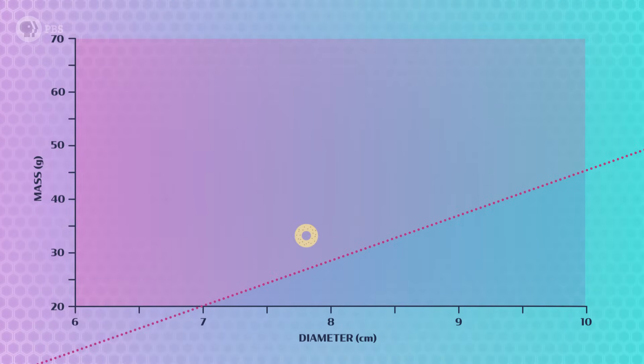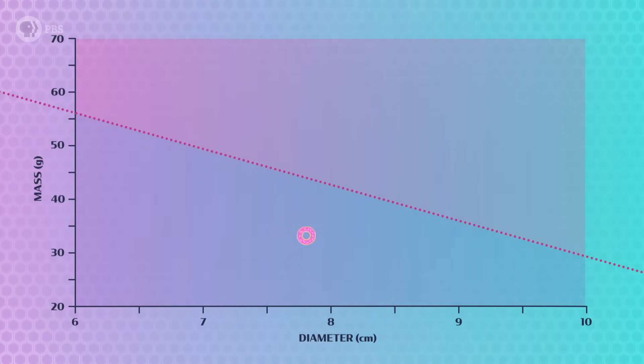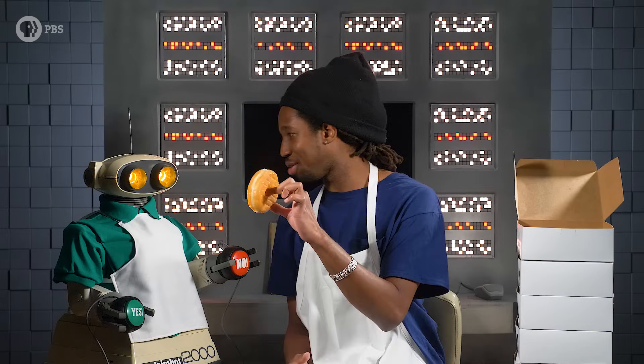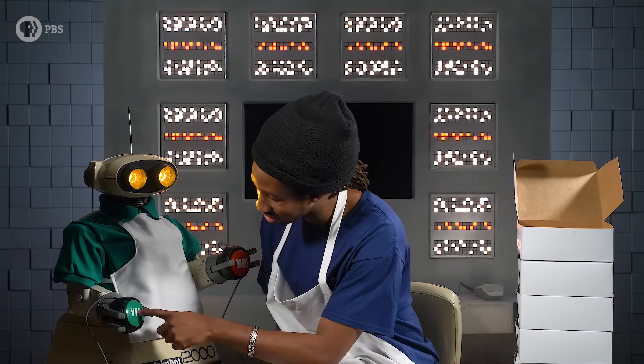Looking back at the graph, we can see that when the weights update, the decision boundary changes. That data point is now below the line, in the doughnut zone. This next item has a mass of 26 grams and a diameter of 6.1 centimeters. John Greenbot says: Doughnut. He got it right! The sum was less than the bias, the data point appeared below the decision boundary in the doughnut zone, so I push the yes button. The update rule works out to zero, so the weights and decision boundary stay the same. Now we do this 48 more times to train his perceptron.